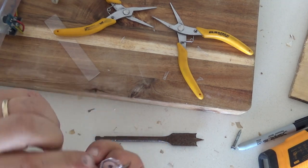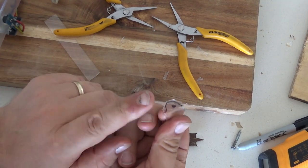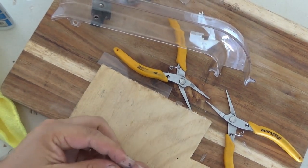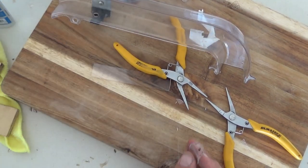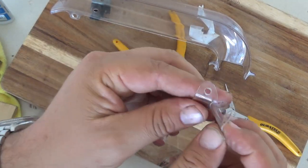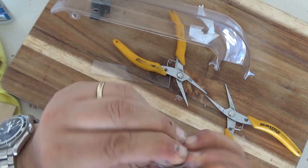You can either sand it by hand or just on a sanding belt of some sort. So I'm going to go and do that and I'll see you in a second and then we're going to drill the hole. That's the most tricky part.